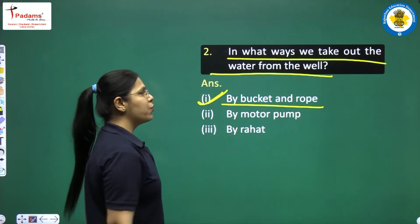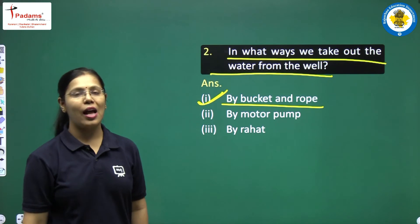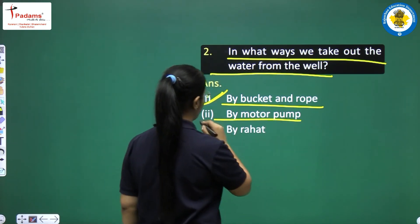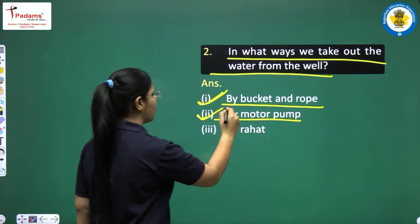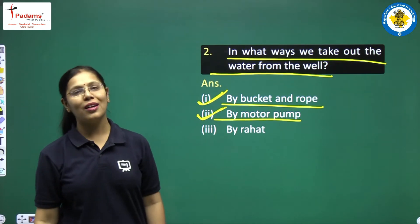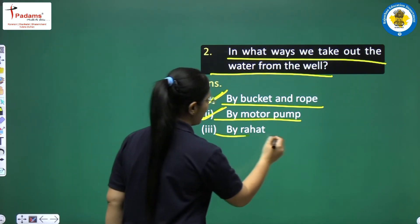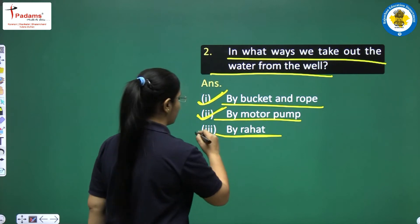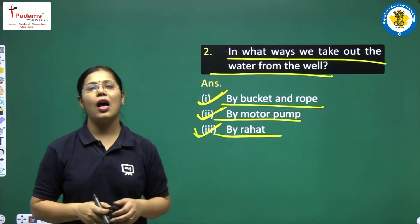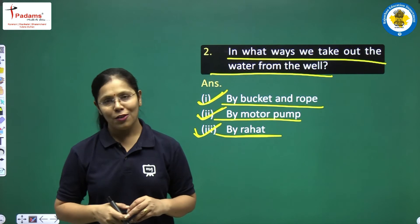We can take out water with the help of a bucket and rope. The second method is by motor pump — we can also take out water using a motor pump. The third method is by a Persian wheel (rahat). We can use a Persian wheel to take out water from the wells.